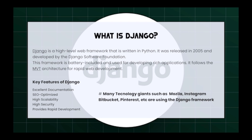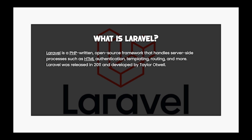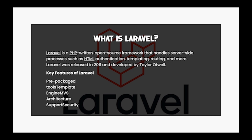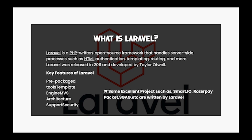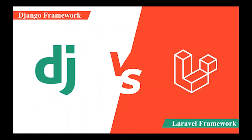Many technology giants such as Mozilla, Instagram, Bitbucket, and Pinterest are using the Django framework. On the other side, Laravel is a PHP-written open source framework that handles server-side processes such as HTML, authentication, templating, routing, and more. Laravel was released in 2011 and developed by Taylor Otwell. Key features include pre-packaged tools, a template engine, MVC architecture support, and security. Projects such as Swart.io, RogerPay, Packet, and 9GAG are written in Laravel.